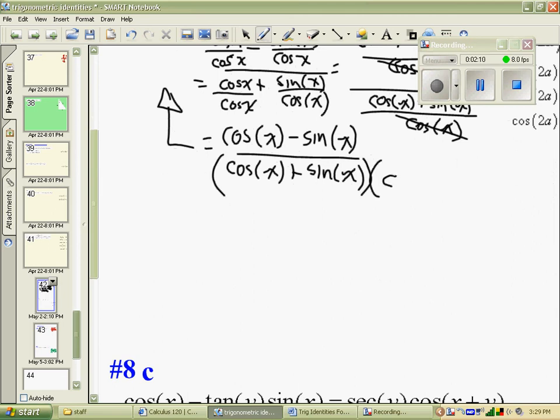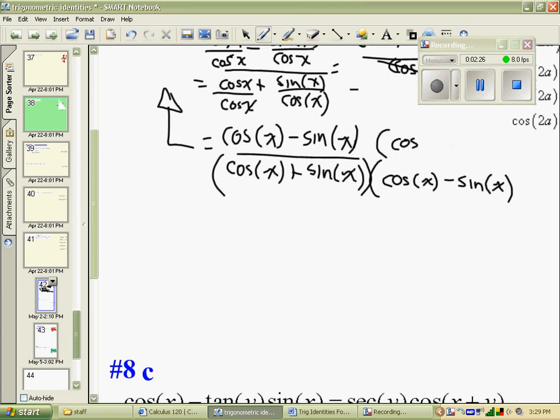cos of cos x minus sin x. The reason I would try and do that is because what's going to be left around here is a whole bunch of sine squareds and cos squareds, and hopefully something is going to happen with that.